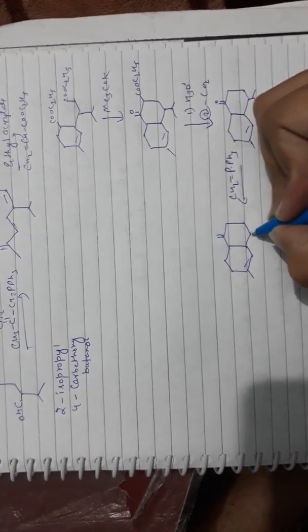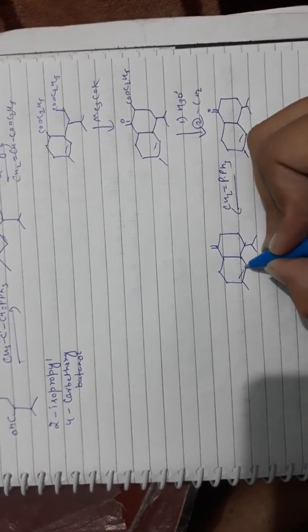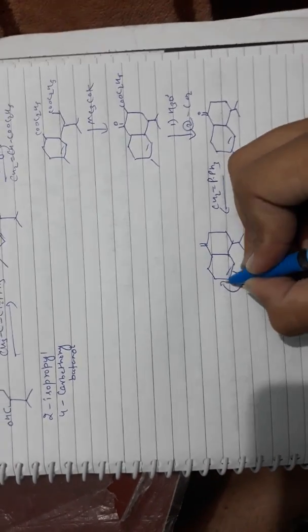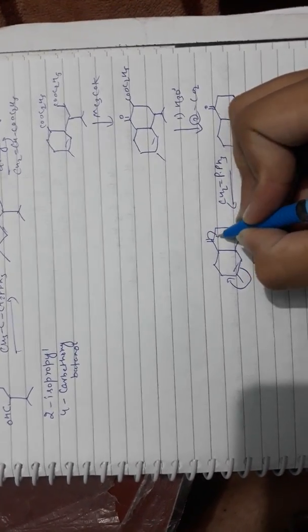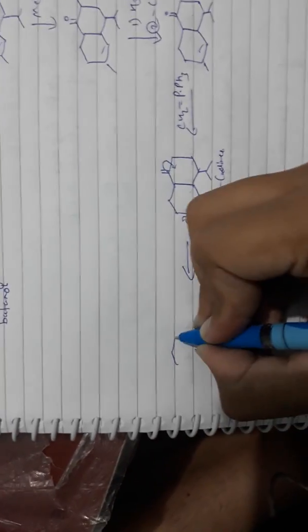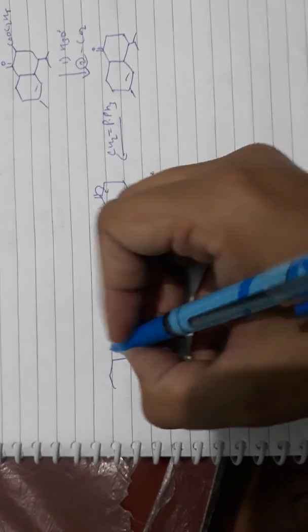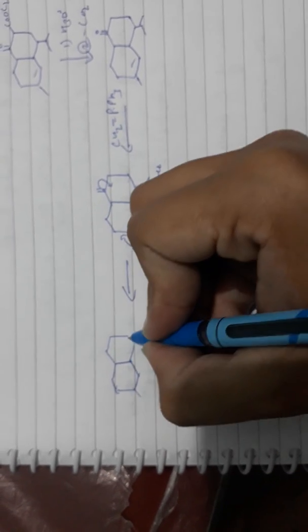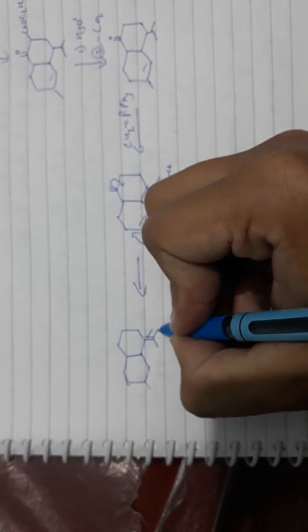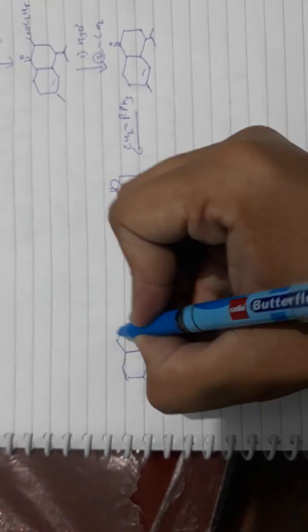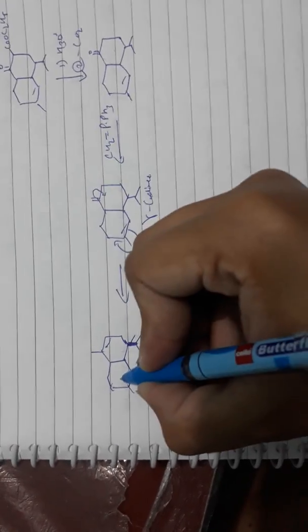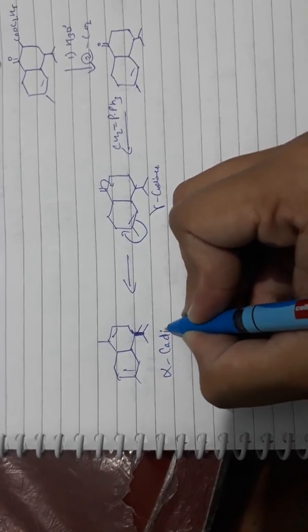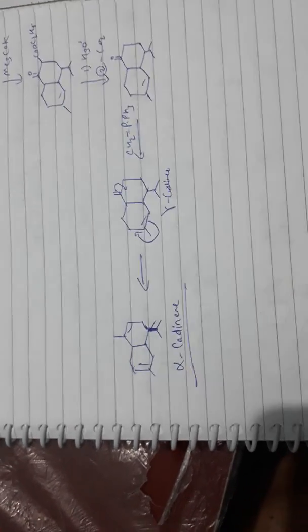Double bond. Okay, alpha-cadinene. Now there is isomerization. This ring structure, alpha-cadinene structure. This is the structure of alpha-cadinene.